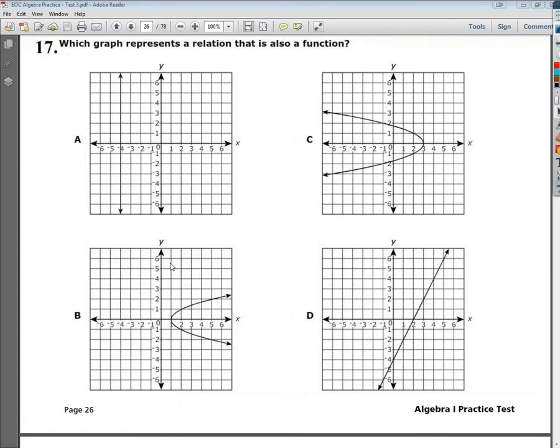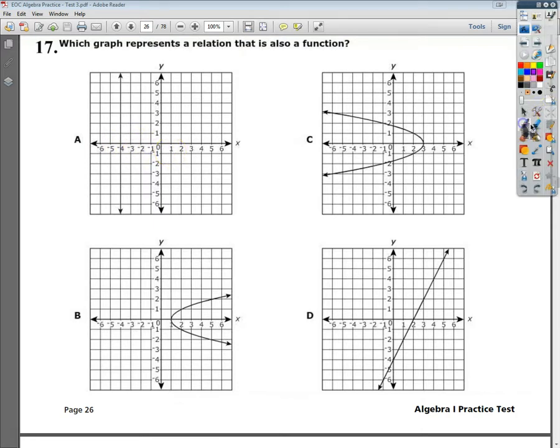We can assess that based on a vertical line test, because what it means really is every x value should only have one y value that goes with it. Now you can have a y value with more than one x, but just straight up and down. So we're going to vertical line test this thing.